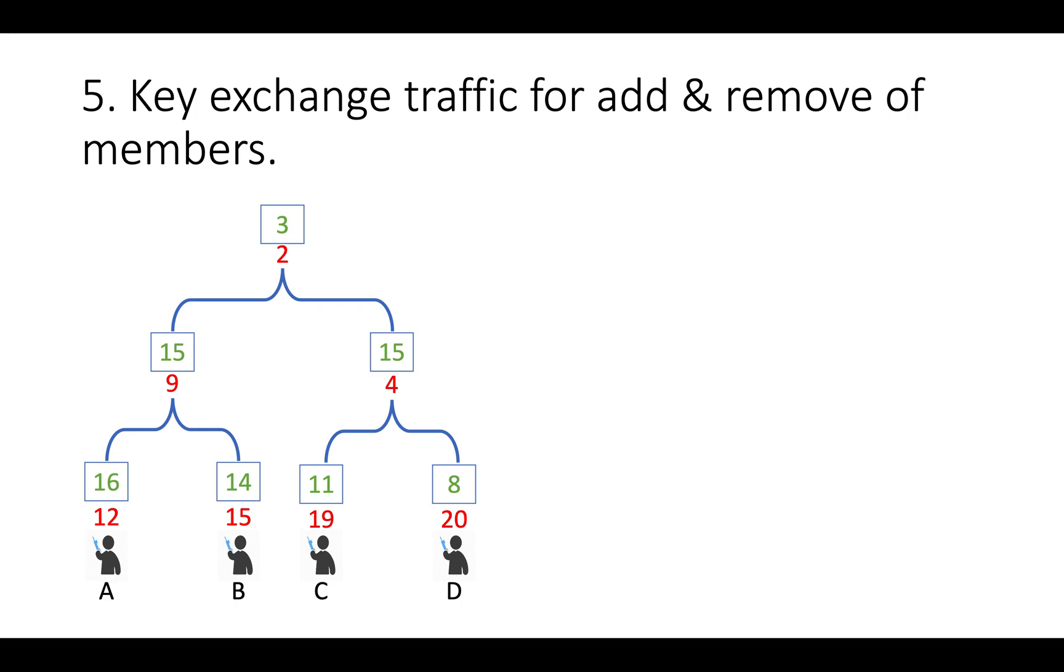Key exchange traffic. In this problem, we have seen that if any member get removed from group, then everyone has to re-exchange key and that will generate n into n-1 traffic to server. So, what happened in case of asynchronous ratchet tree? Just for hint, it will generate traffic of n. Now, how asynchronous ratchet tree will help to reduce traffic to n that I am leaving to you.